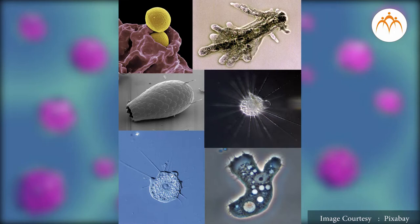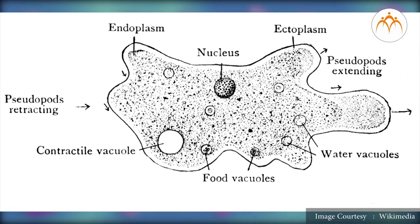Cell is the basic unit of life. For a unicellular organism, one cell itself is one organism, while for a multicellular organism, one cell is the starting point of life. Understanding the components of the cell as well as the structure and functions of the cell organelles helps us to understand various processes happening inside the cell.